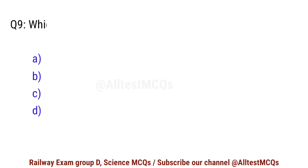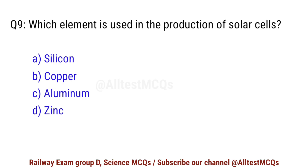Question No. 9. Which element is used in the production of solar cells? Correct option is A. Silicon.